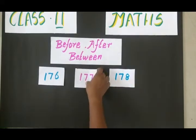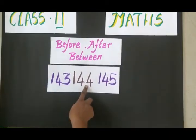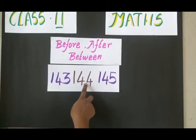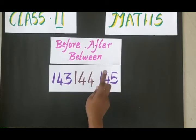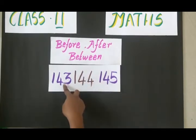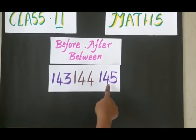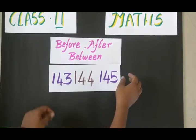Here I am going to place one more example. 144 is the given number. To find the after number, I am going to add one to the given number, so 145 comes after 144, and 143 comes before 144. So 144 is the between number of 143 and 145.